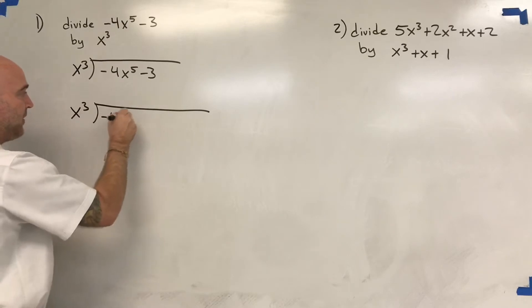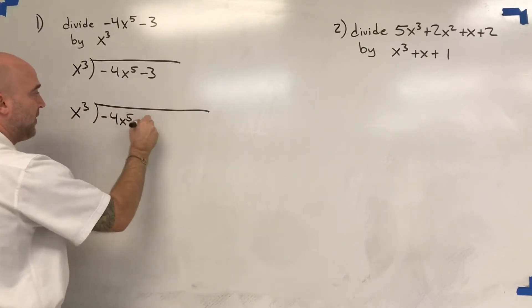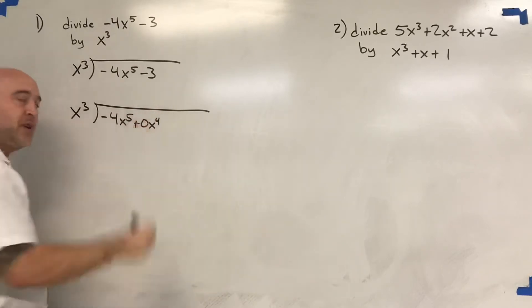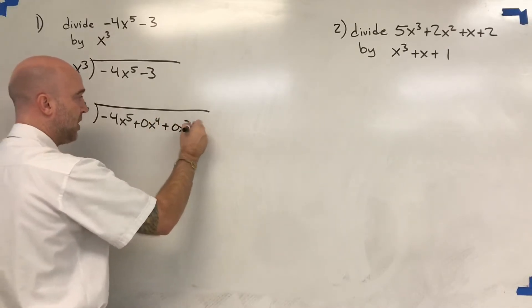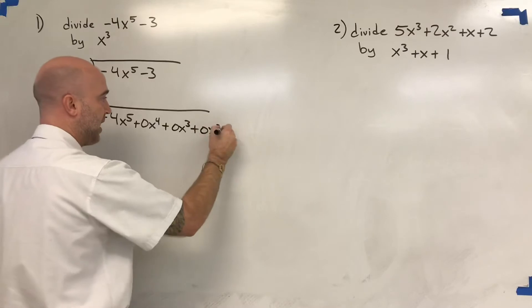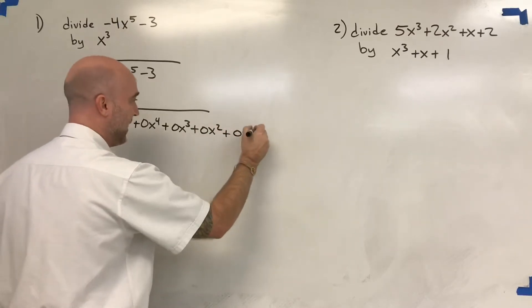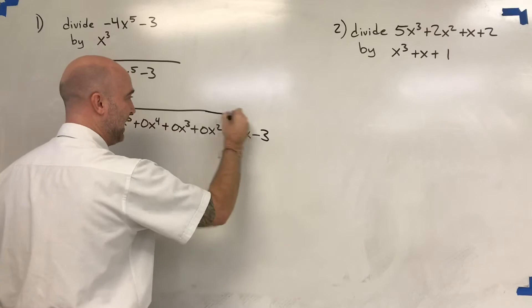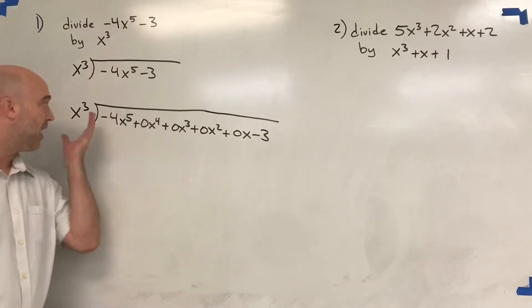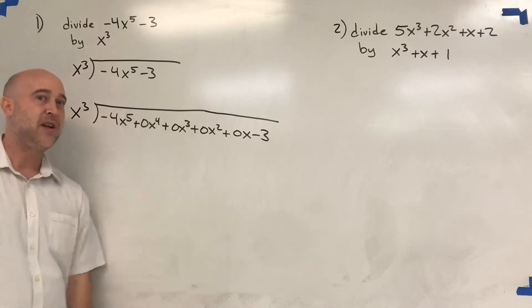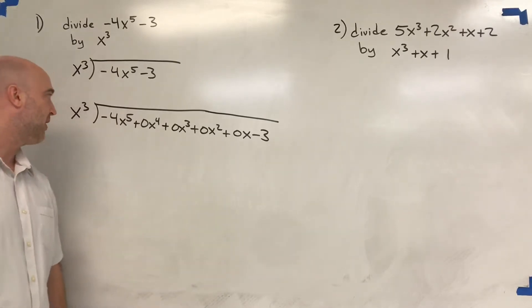Negative 4x to the 5th, it's missing x to the 4th, so I'll give it an x to the 4th. 0x to the 4th plus 0x cubed plus 0x squared plus 0x minus that 3 at the end. So what that allows us to do is we just can fill in each spot when we do it with the long division style. So here's how I do it.